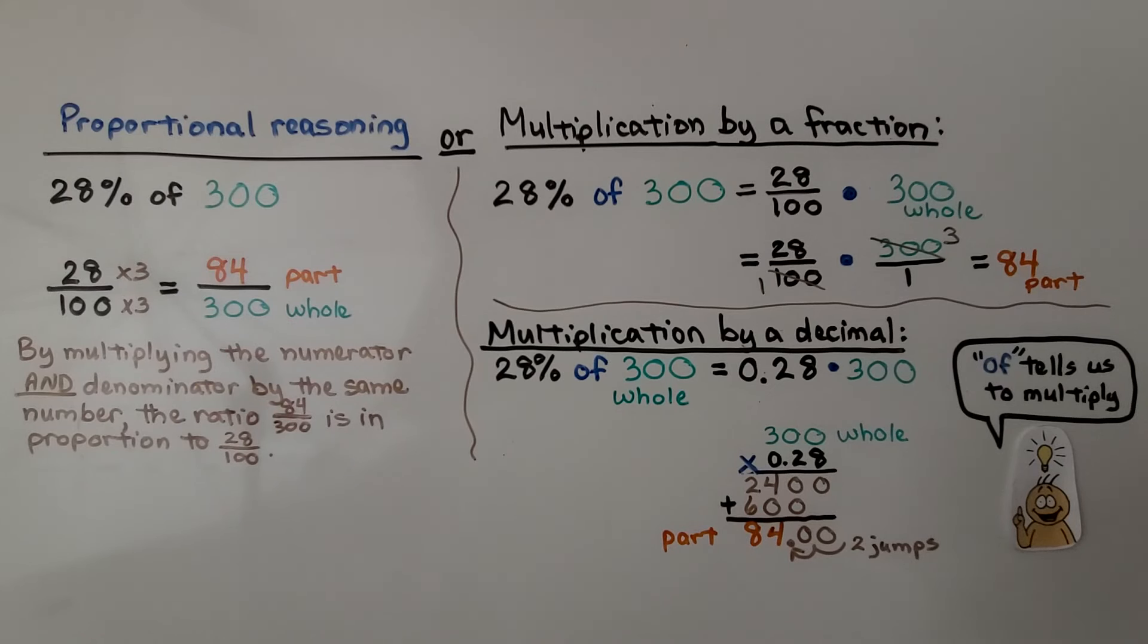We can find the percent of a number by using proportional reasoning, 28% of 300. By multiplying the numerator and denominator by the same number, the ratio 84 three-hundredths is in proportion to 28 hundredths.